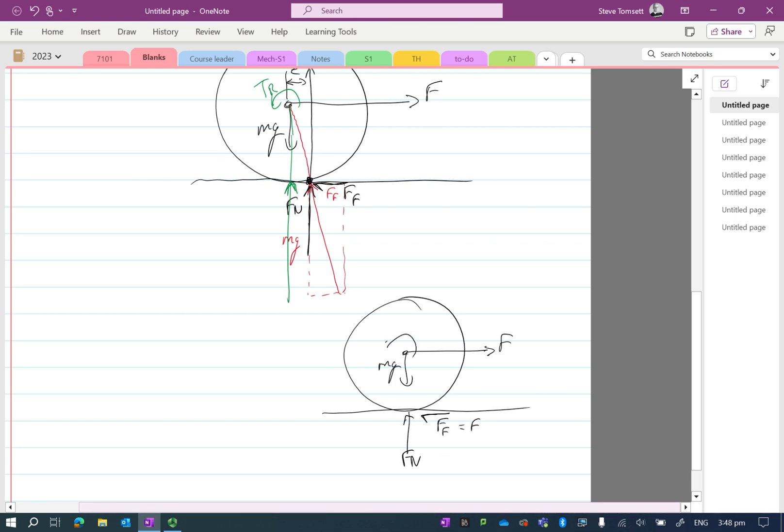And we will have an equivalent torque from my rolling resistance acting against the direction of rotation. So my velocity is this way and my omega is this way. And the main part in here is that my TR is equal to the Fn times the eccentricity value.